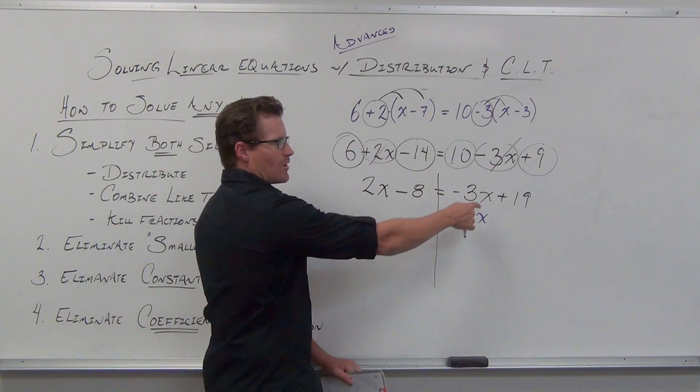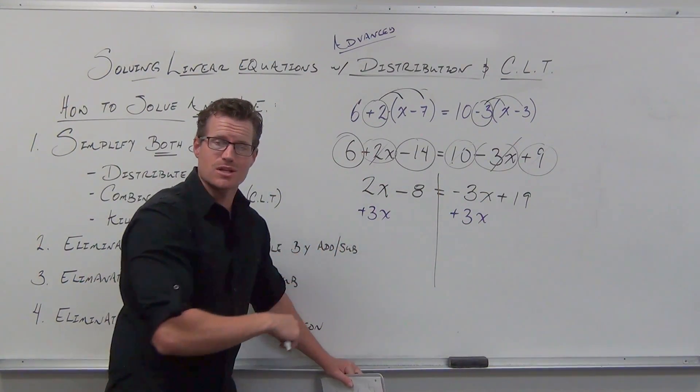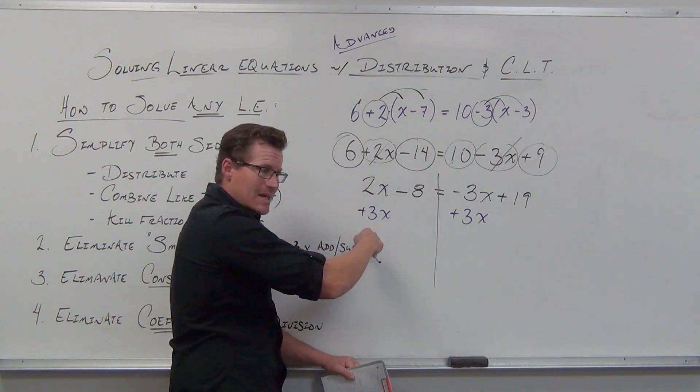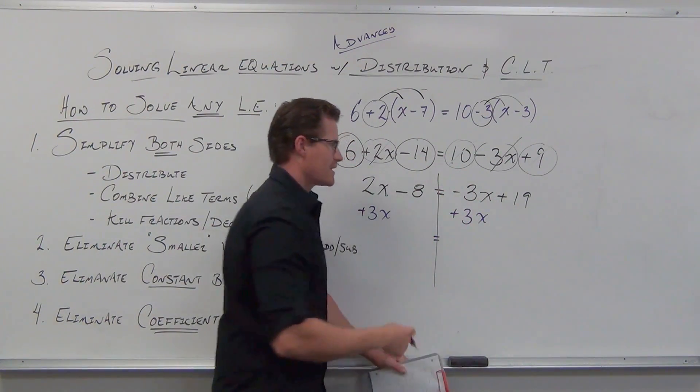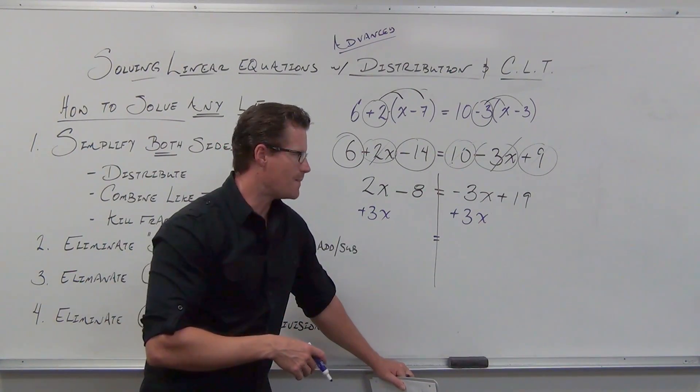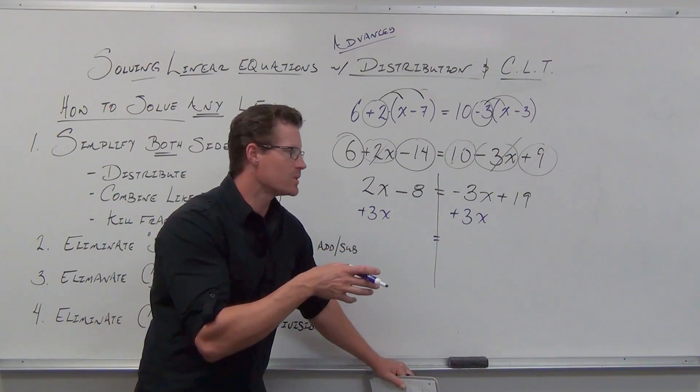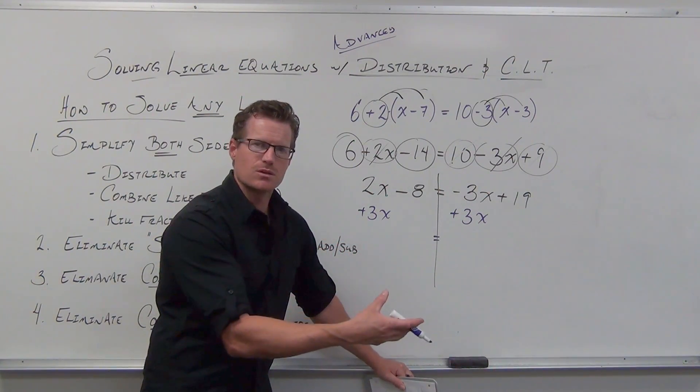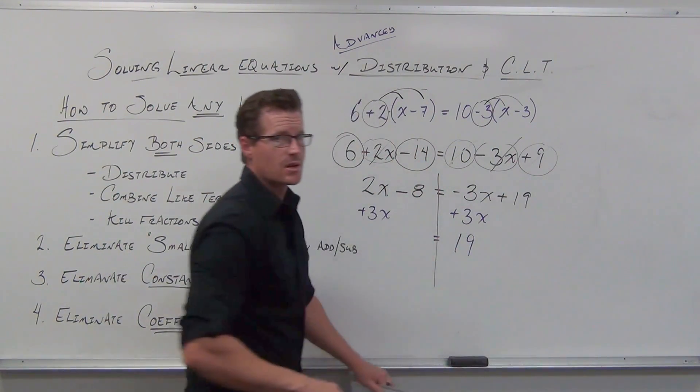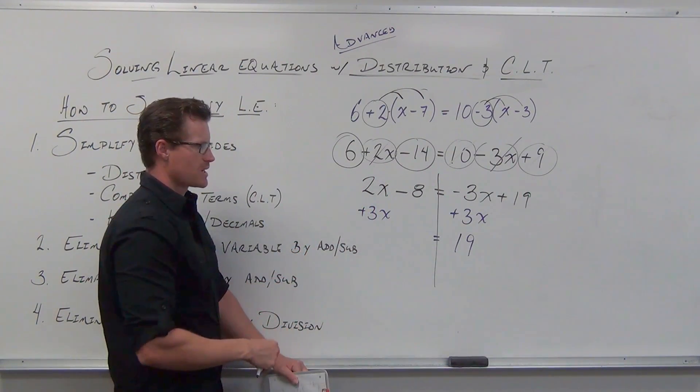Now, what's kind of cool is when you start getting rid of entire terms, you also start creating like terms on the other side of your equation. These aren't like terms right here, but these are like terms. On the right-hand side, we're going to get 19. Negative 3x plus 3x, that's 0. That's exactly why we did that. On the left-hand side, now that we've created some like terms, 2x plus 3x, we have 5x.